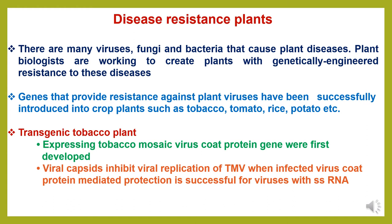Disease resistance through genetic engineering. There are many viruses, fungi and bacteria that cause plant diseases. Plant biologists are working to create plants with genetically engineered resistance to these diseases. Genes that provide resistance against plant viruses have been successfully introduced into crop plants such as tobacco, tomato, rice, potato, etc. There are transgenic tobacco plants expressing tobacco mosaic virus coat protein genes that were first developed. Viral capsid inhibits viral replication of tobacco mosaic virus when infected — virus coat protein mediated protection is successful for the virus.